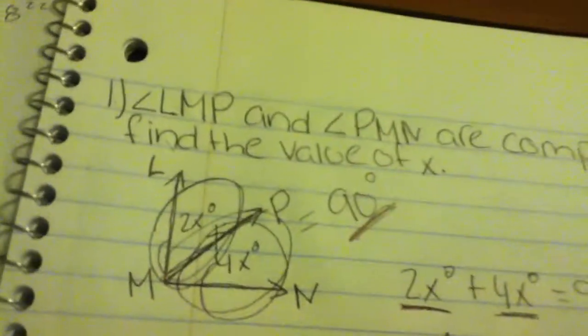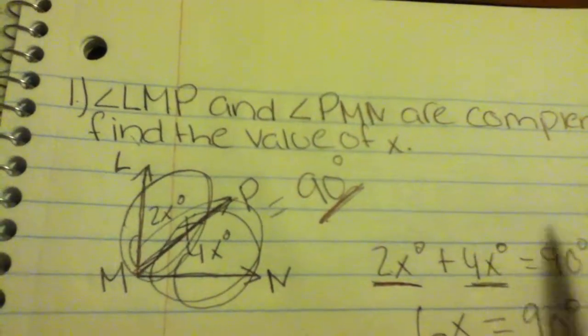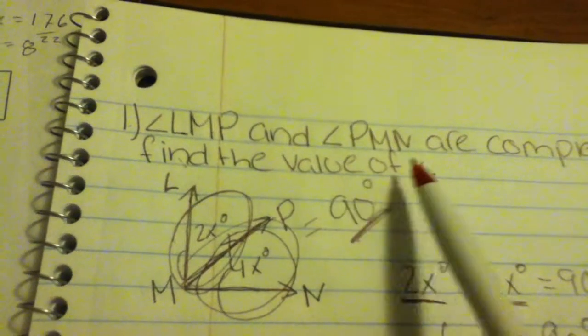This angle right here is a complementary angle which means it adds up to 90 degrees. What we're doing here is we're going to find the value of x.